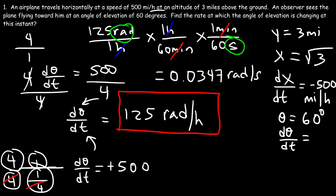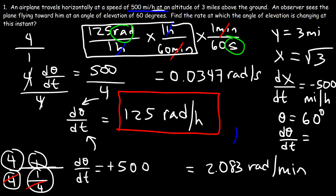If you want it in radians per minute, just focus on this portion. So it will be 125 over 60. And so you can say dθ/dt is equal to 2.083 radians per minute. So you can report your answer in any one of these units. But for the most part, since the speed is in miles per hour, you probably want the final answer to be in radians per hour. You want the time to match, which is usually the case.